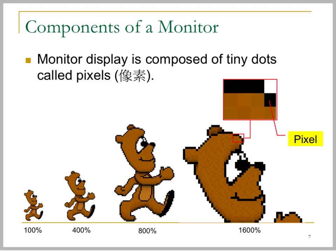If we magnify the display of a computer screen, we can actually see that there are tiny dots which compose the computer screen, which we call pixels. If you enlarge this picture, we can see that these small squares are called pixels. They are the basic components of a computer monitor.